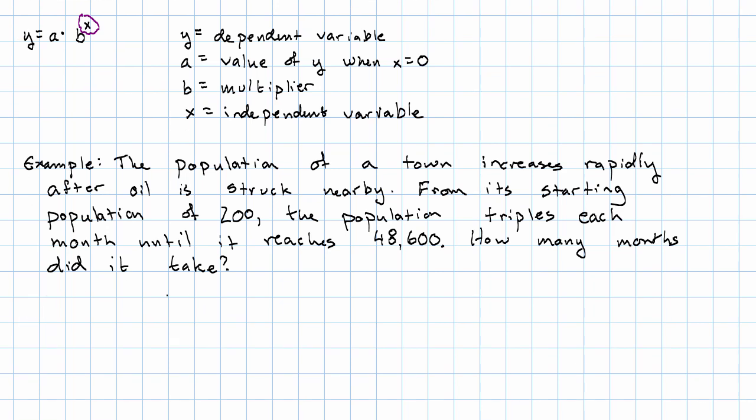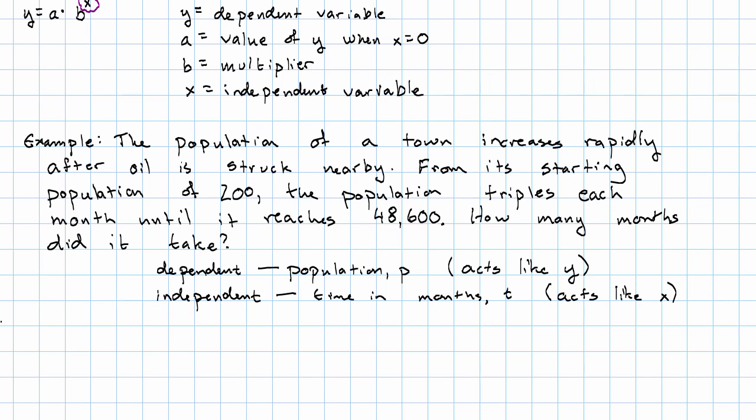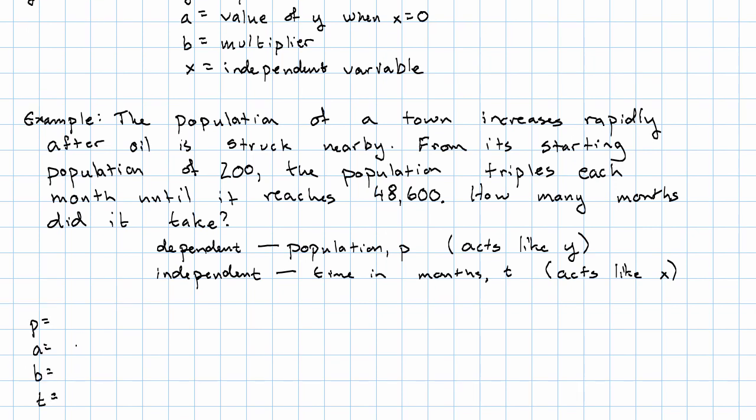We know our dependent variable is the population, and our independent variable is the time in months. The dependent variable acts like y, and the independent variable acts like x. We know that the starting population was 200. We know that every month the population triples. That means multiplies by 3.